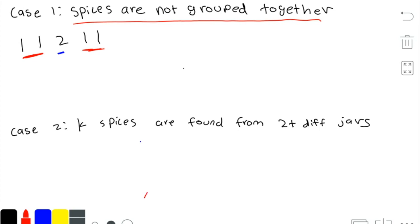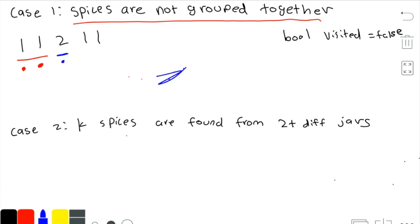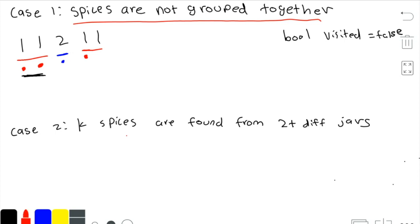However, we come across another set of ones later. To handle this, we use a visited array — a boolean array set to false. As we loop through the recipe, we mark one as visited when we first encounter it, then find all consecutive ones. When we later encounter another one that has already been visited, we know it is not chef's recipe.